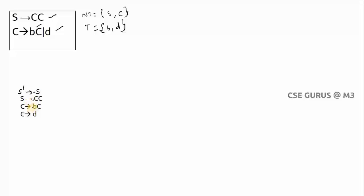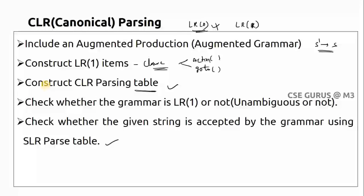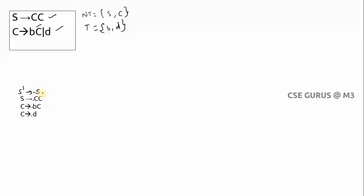In SLR parsing there are no lookaheads, but here in CLR we need lookaheads. So the next step is to construct LR(1) items. We need to add lookaheads for each production. There are four productions after augmentation. I'll place a comma after each production to separate the lookahead. Now let me explain how to determine the lookahead for each production.